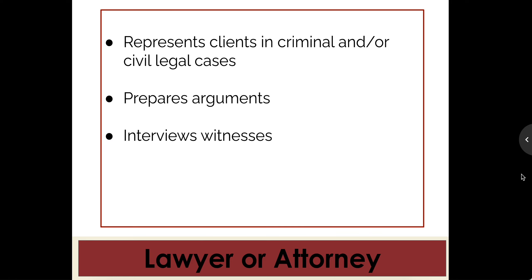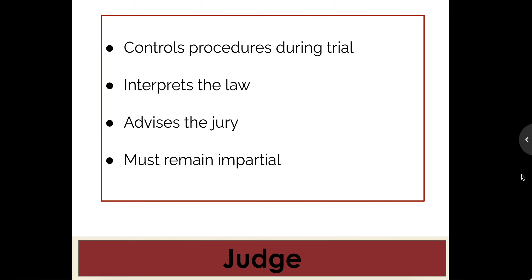Next person in the courtroom: this person controls procedures during trial, they interpret the law, they advise the jury especially if they have questions about the application of the law, and their job is to remain impartial. This is a judge. So in the box to the left of that description, write judge.